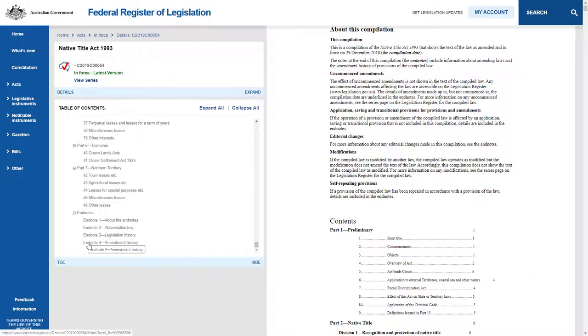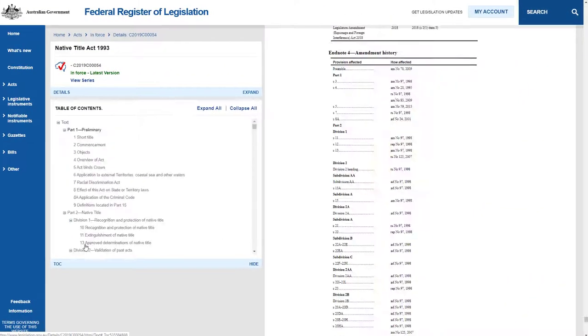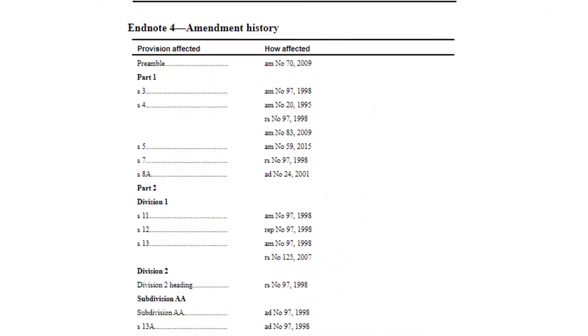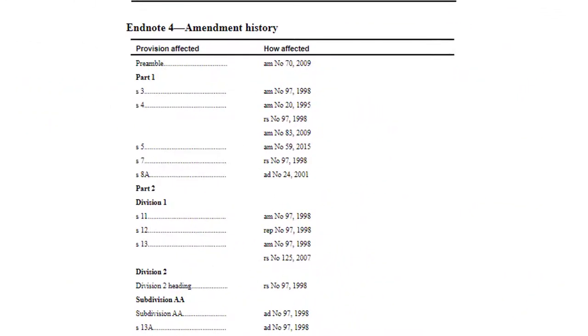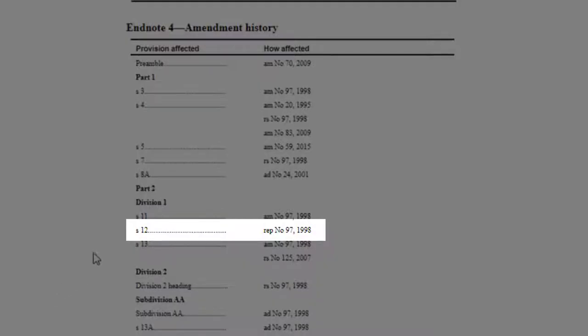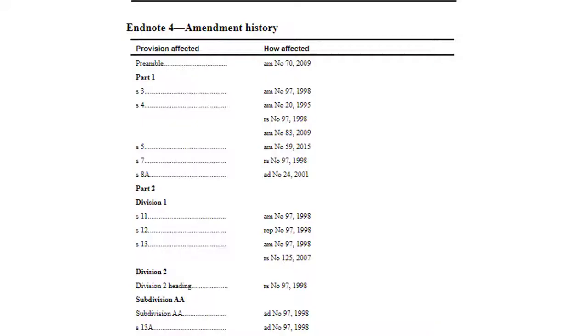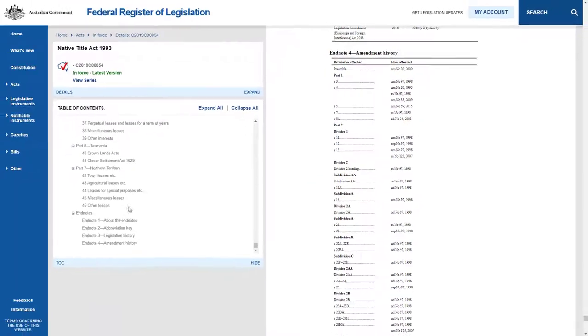Amendment History allows you to track how a particular section in the Act has been amended. For example, Section 12 was repealed by Act No. 97 of 1998, the Native Title Amendment Act 1998.